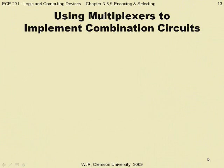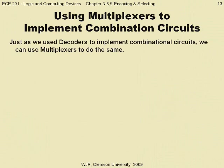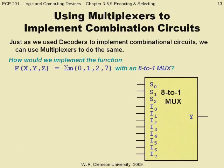Let's conclude by discussing another practical use of multiplexers. Just as we examined how we could use an m-to-n decoder to implement any m-variable function, we will now examine how we can use an n-to-1 mux to implement some m-variable function. To understand how, let's first look at implementing this three-variable function f with an 8-to-1 mux as shown.